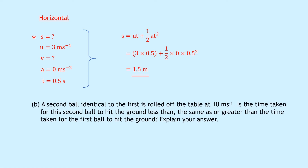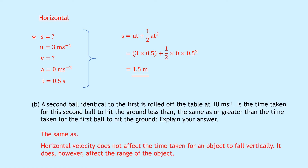Part B says a second identical ball is rolled off the table at 10 meters per second. Is the time taken for this second ball to hit the ground less than, the same as, or greater than the time for the first ball? The time is going to be the same, because the horizontal velocity does not affect the time taken for an object to fall vertically. It does however affect the range. Only the acceleration due to gravity affects the fall time, and at higher level we ignore air resistance.